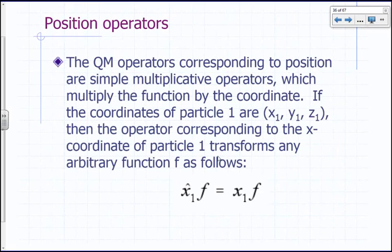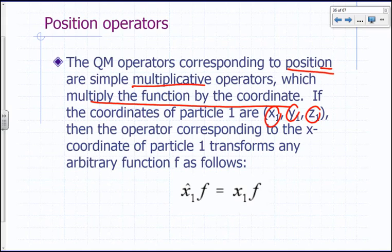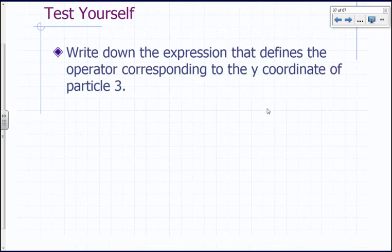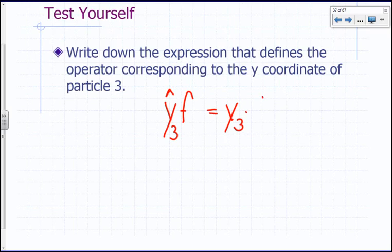Quantum mechanical operators corresponding to position are multiplicative operators that multiply the function by the coordinate. For example, x1-hat simply multiplies any function by x1. So the operator for the y-coordinate of particle 3 is y3-hat, and operating on a function just gives y3 times that function — a real multiplicative operator, hence Hermitian.